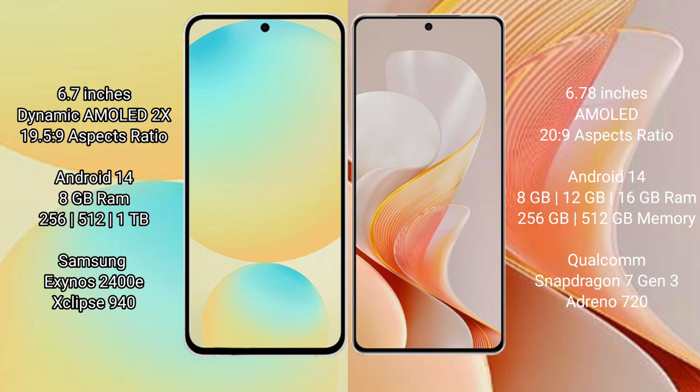Vivo S19 comes with 8GB to 16GB RAM and 256GB to 512GB internal storage. It is powered by the Qualcomm Snapdragon 7 Gen 3 processor with a GPU.